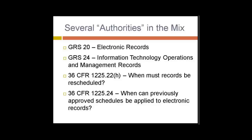There are several authorities in the mix, which complicates GRS 20 and understanding how to use it. GRS 20 deals with electronic records, and GRS 24 talks about information technology operations and management records — related, but a little bit different. There are also a couple of 36 CFRs that are applicable: 36 CFR 1225.22H talks about when records must be rescheduled upon conversion to another format, and 36 CFR 1225.24 addresses when previously approved schedules can be applied to electronic records. You'll see those citations again as we move into the FAQs.